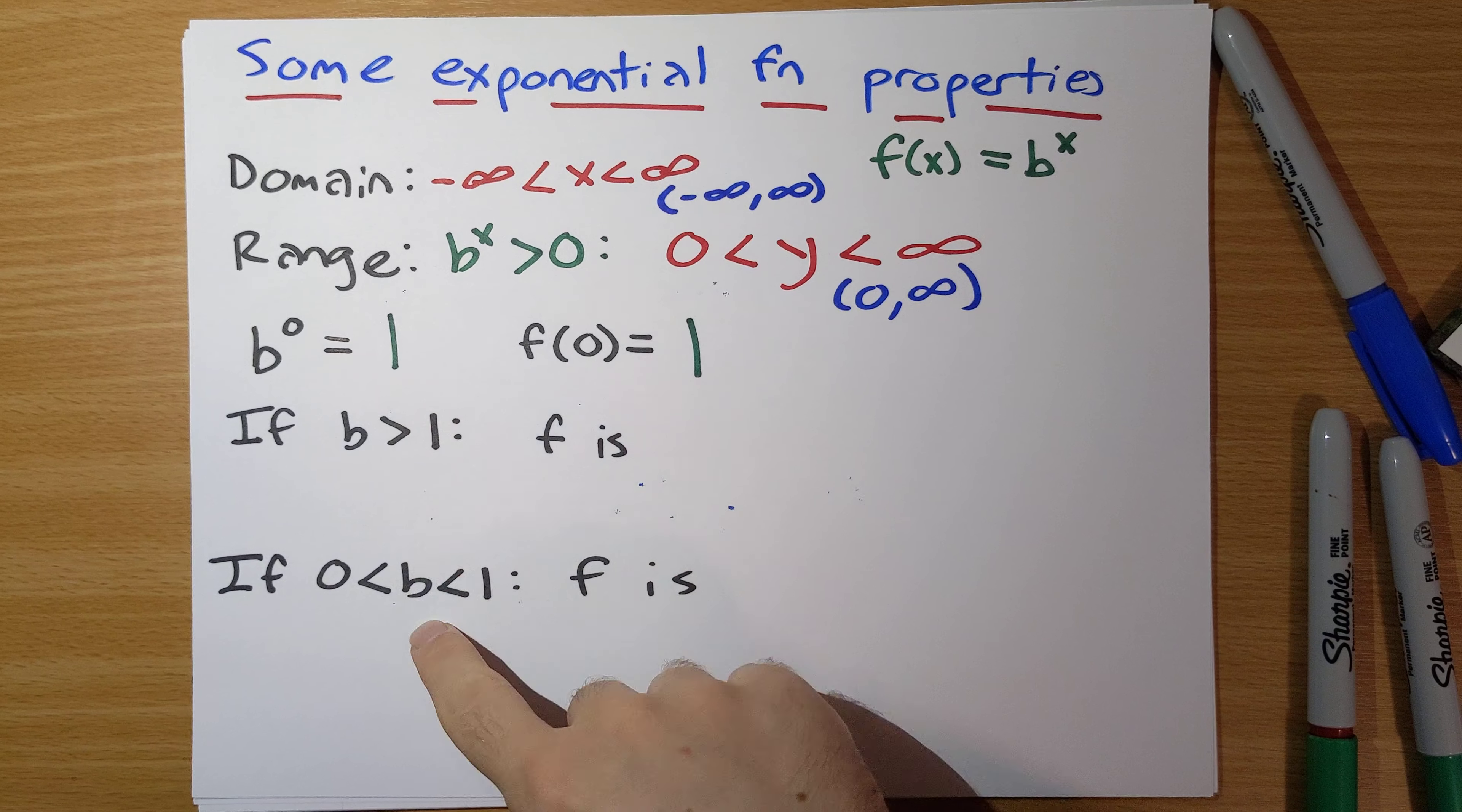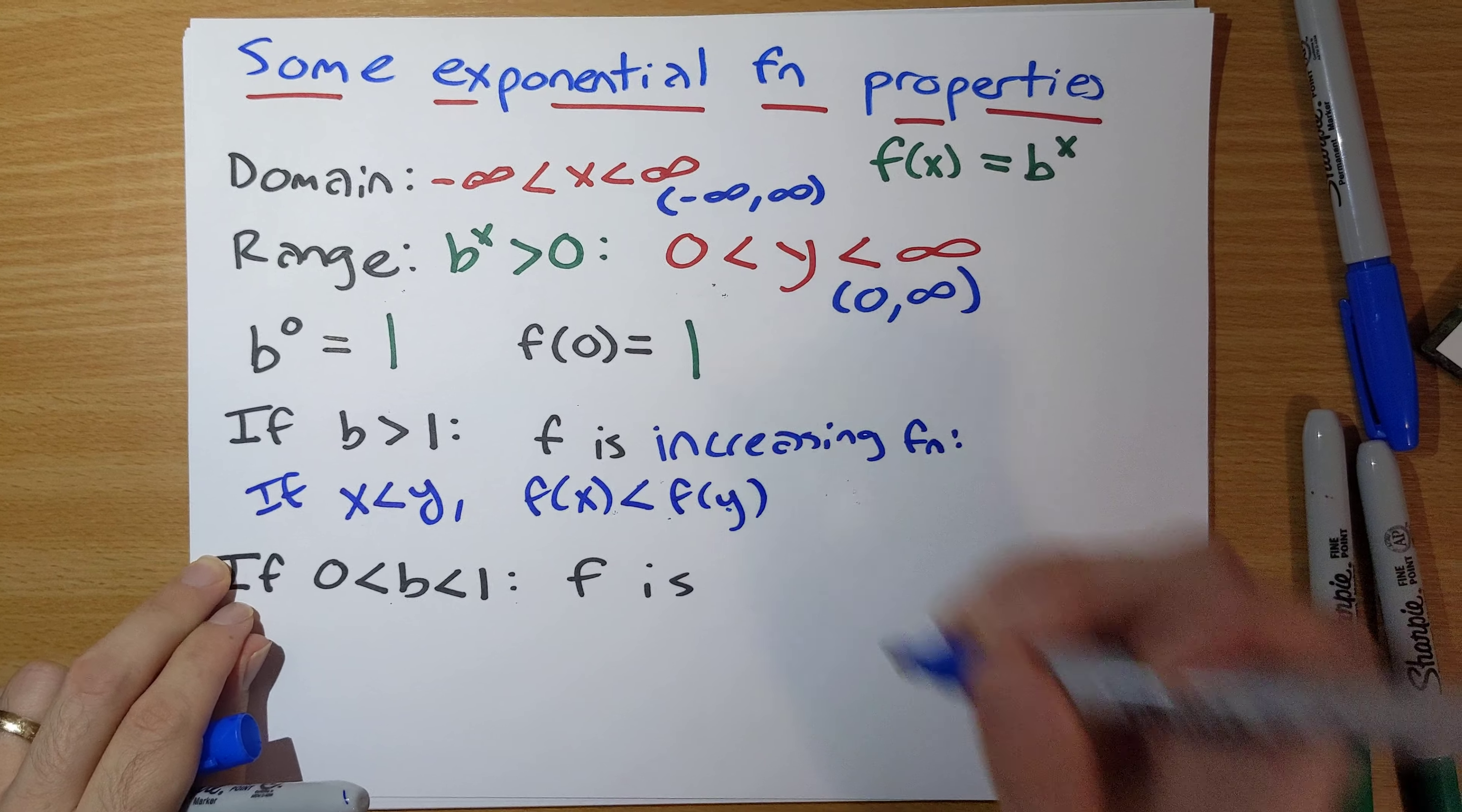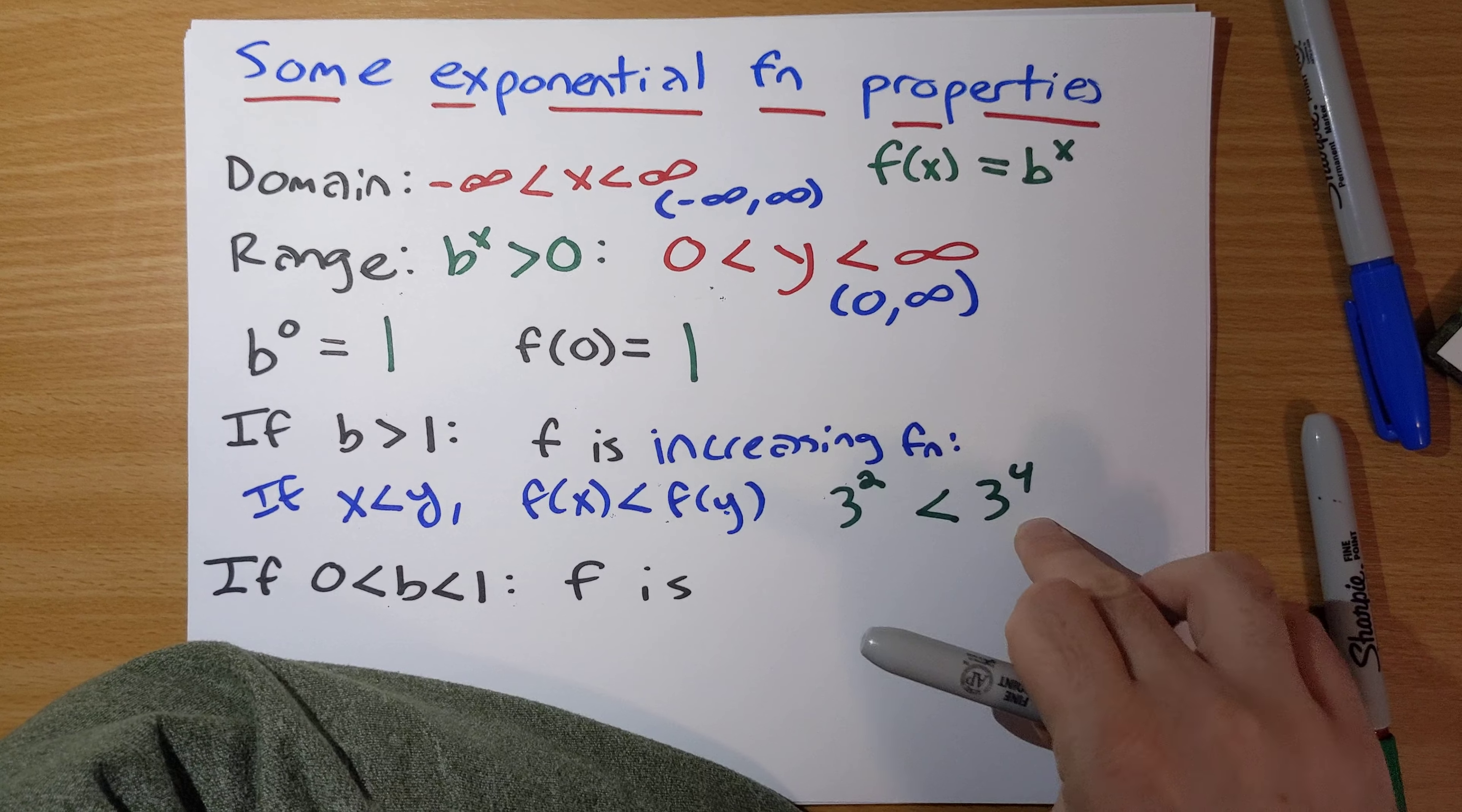Now we have to break it down to two cases: if b is bigger than 1 and b is less than 1 but still positive. If b is bigger than 1, f is an increasing function. So that would mean if x is less than y, f of x is less than f of y. And this makes sense. If we were to use b is 3, so 3 squared is less than 3 to the 4th. So the b here is 3, 3 squared is 9, 3 to the 4th is 81. 4 is bigger than 2, 3 to the 4th is bigger than 3 squared.